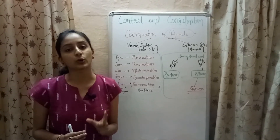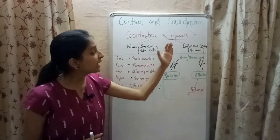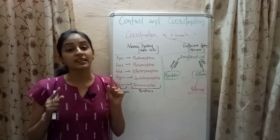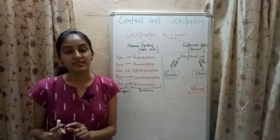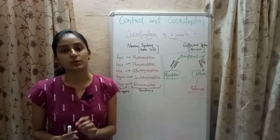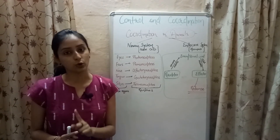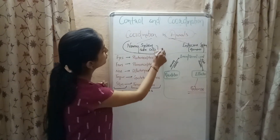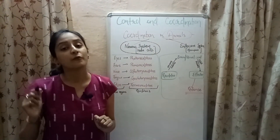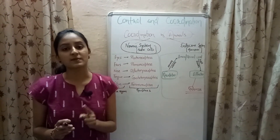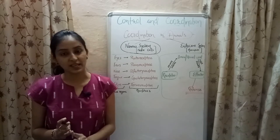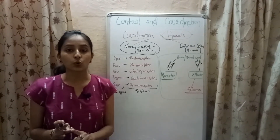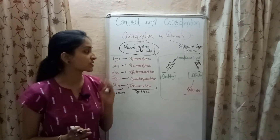In simple multicellular organisms like Hydra the endocrine system is absent, so only the nervous system controls coordination. In higher organisms like human beings, both the nervous system and the endocrine system control the process of control and coordination.